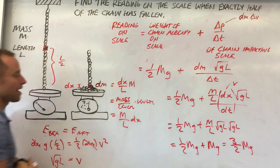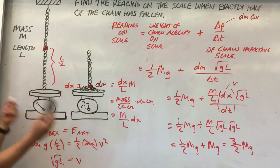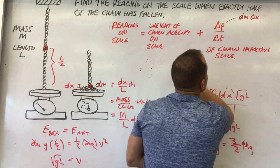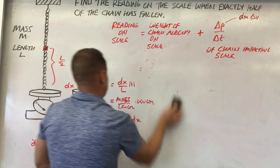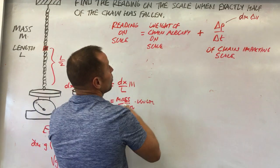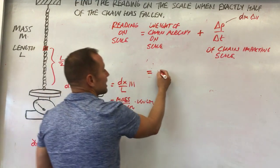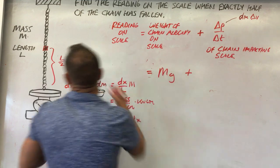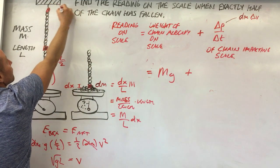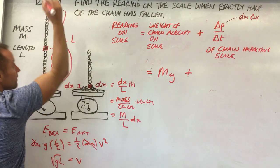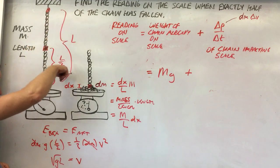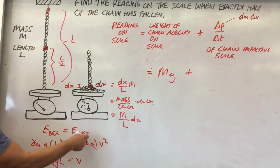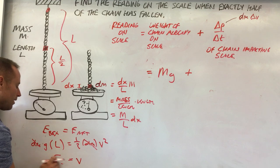Now let's extend this to the full chain. When the very last link is hitting, essentially the whole chain is on the scale, so the static weight contribution is Mg. For the velocity, the last link has fallen the full length L instead of L/2. Using energy conservation: Mg·L equals (1/2)Mv², so v equals root-2gL.